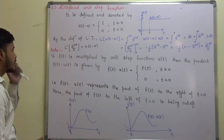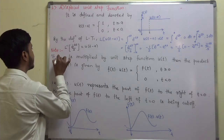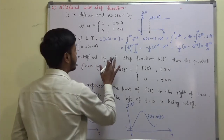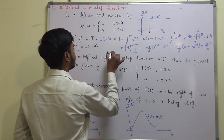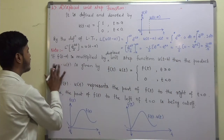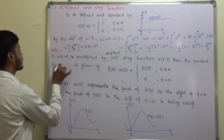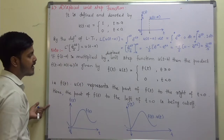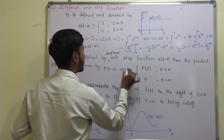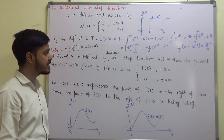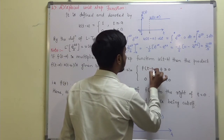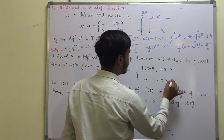Now suppose you have a function f(t − a), and this function is multiplied by the displaced unit step function u(t − b). Then the product f(t − a)·u(t − b) equals f(t − a) for t greater than or equal to b, and 0 for t less than b.